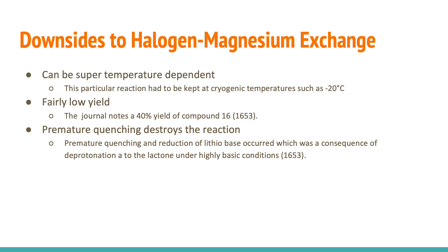Now that we've gone over what halogen-magnesium exchange is and why we should use it, let's discuss the downsides. One of the major downsides is that it is a highly temperature-dependent reaction. When doing Grignard reactions, they are typically temperature-dependent — some need to be very hot, while others need to be very cold. In this case, it had to be kept at a cryogenic temperature around negative 20 degrees Celsius. If this isn't properly adhered to, the whole reaction can fail.